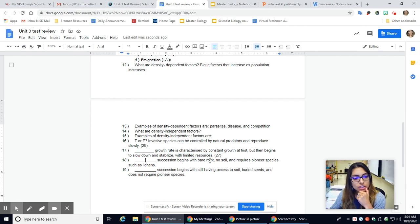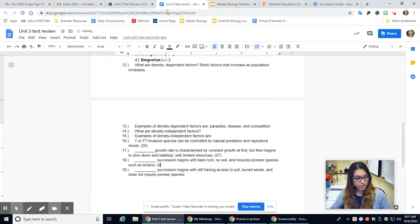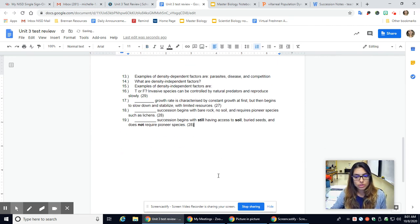Number 18. This kind of succession starts with bare rock, no soil, and requires a pioneer species. So this is eco-succession. Is that 28? Yes, it is. Slide 28. And this kind of succession begins with still having access to soil, buried seeds, and does not require a pioneer species. I'm going to bold these. Still has soil.